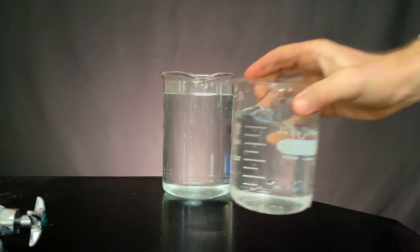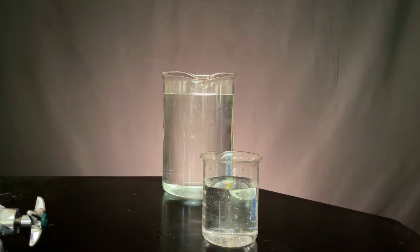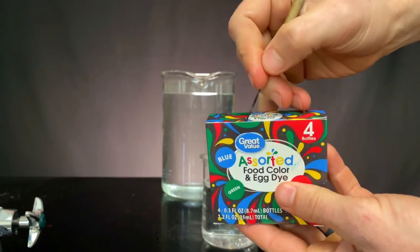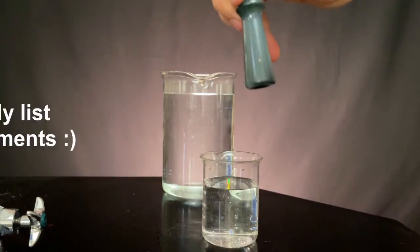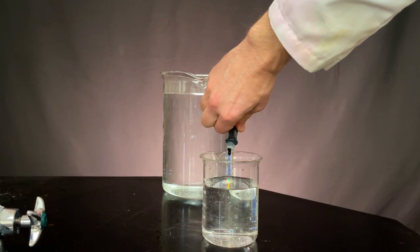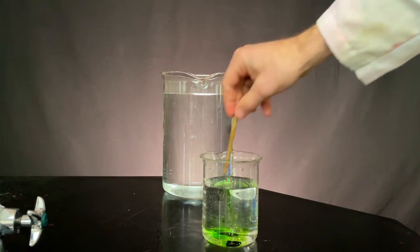Here's a large beaker of clear water and a small beaker of clear water. Let's get a new box of food coloring and crack it open to get the green dye out. I'll use two drops of dye and stir it really inefficiently with this little anatomy probe.